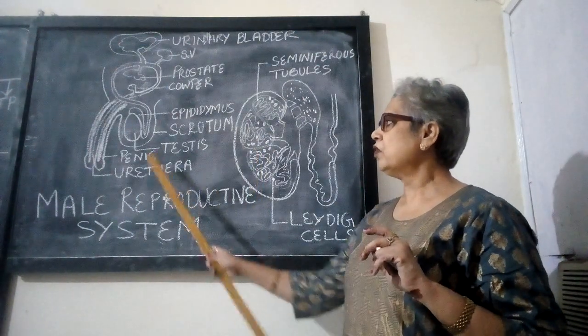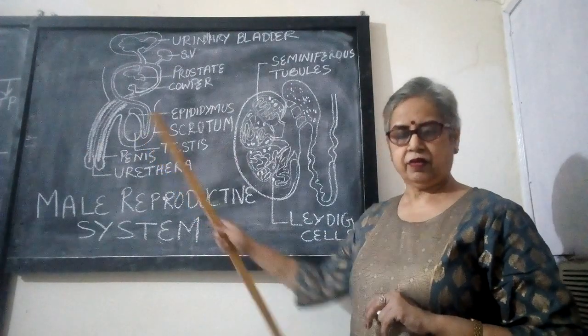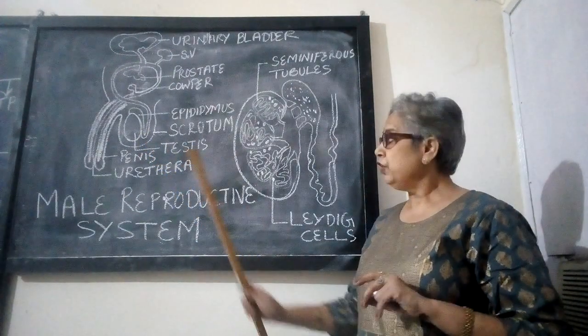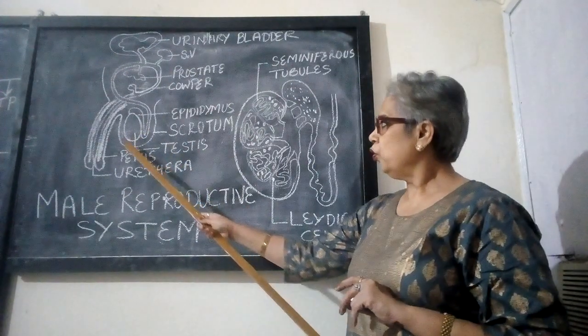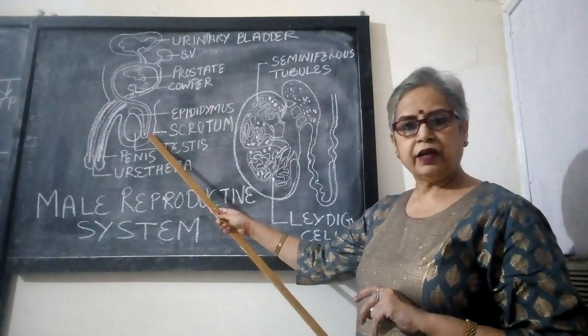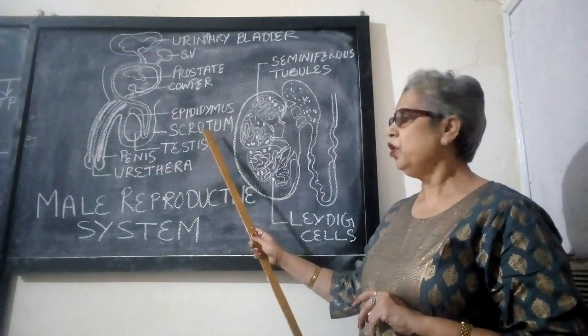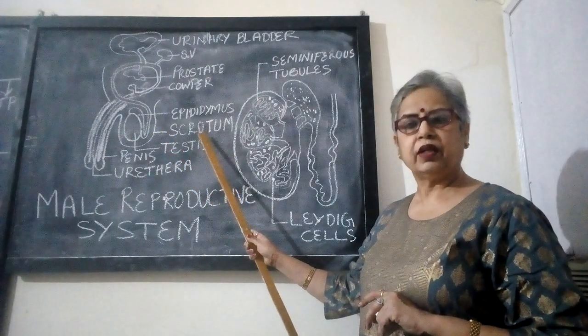The primary parts are a pair of testes, which are enclosed in a bag or pouch-like structure called the scrotum or scrotal sac.